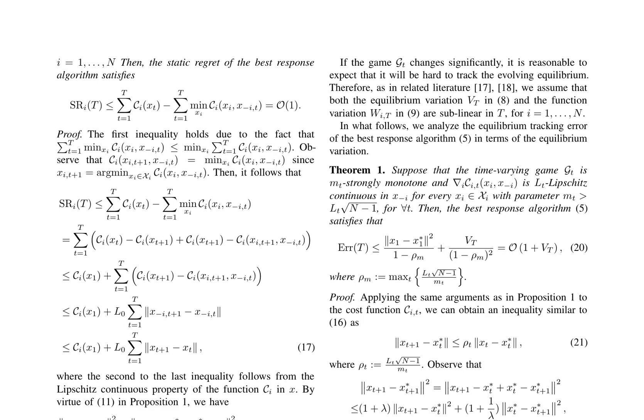In this section, the authors explore the analysis of time-varying games, where cost functions for agents change over time. They assume that both the equilibrium variation and function variation are sublinear in T, following related literature. The primary focus is on the equilibrium-tracking error of the best-response algorithm in these dynamic environments.